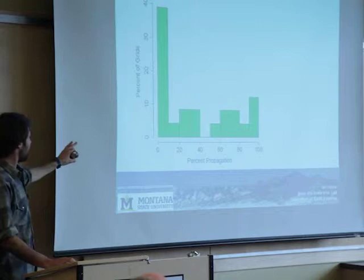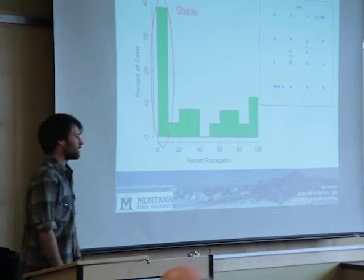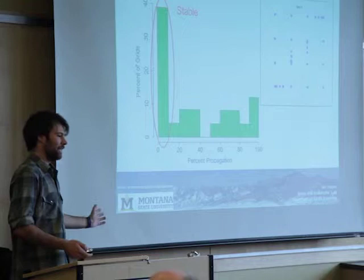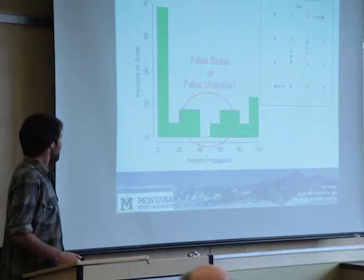This first histogram shows all of my results. On the left-hand side is 0% propagation — when I did a whole slope and none of my ECTs propagated. About 40% of the time across my slopes, that's what I was getting. On the other side, when pretty much everything propagates, that's clearly an unstable test result.